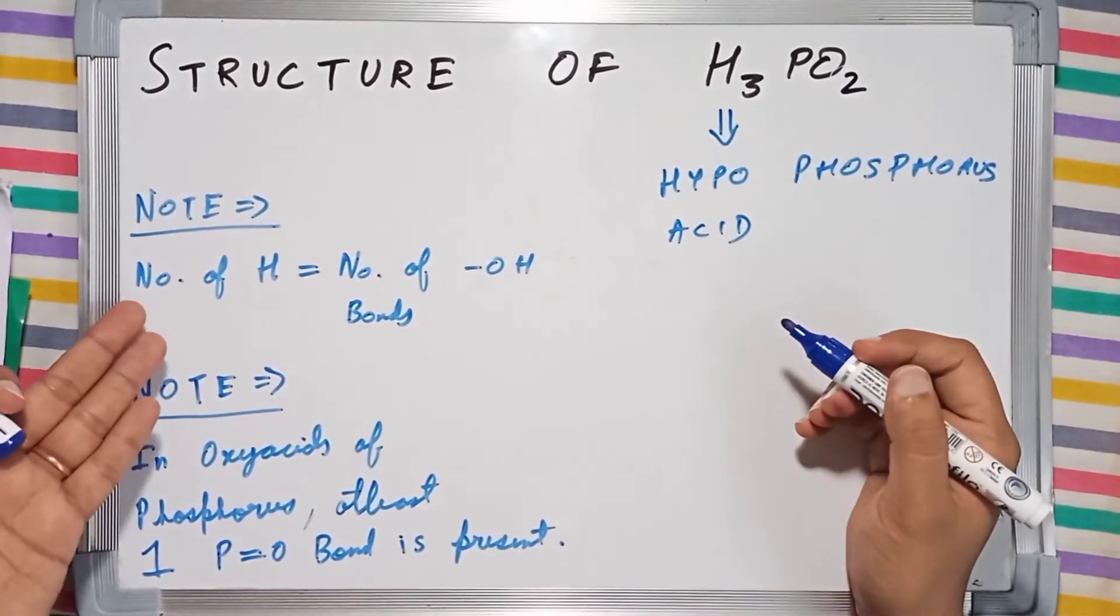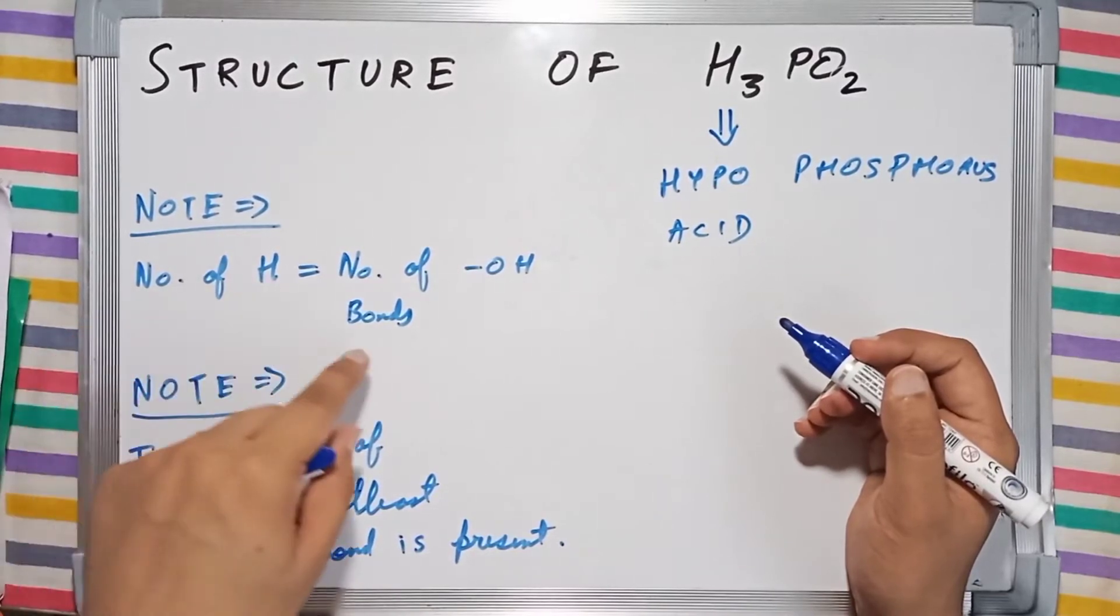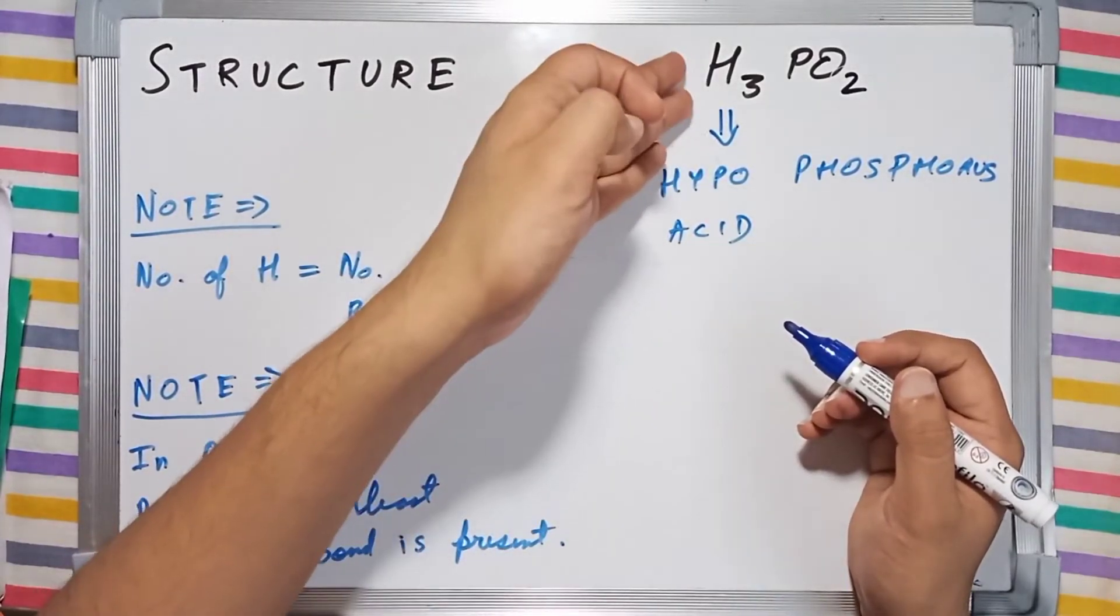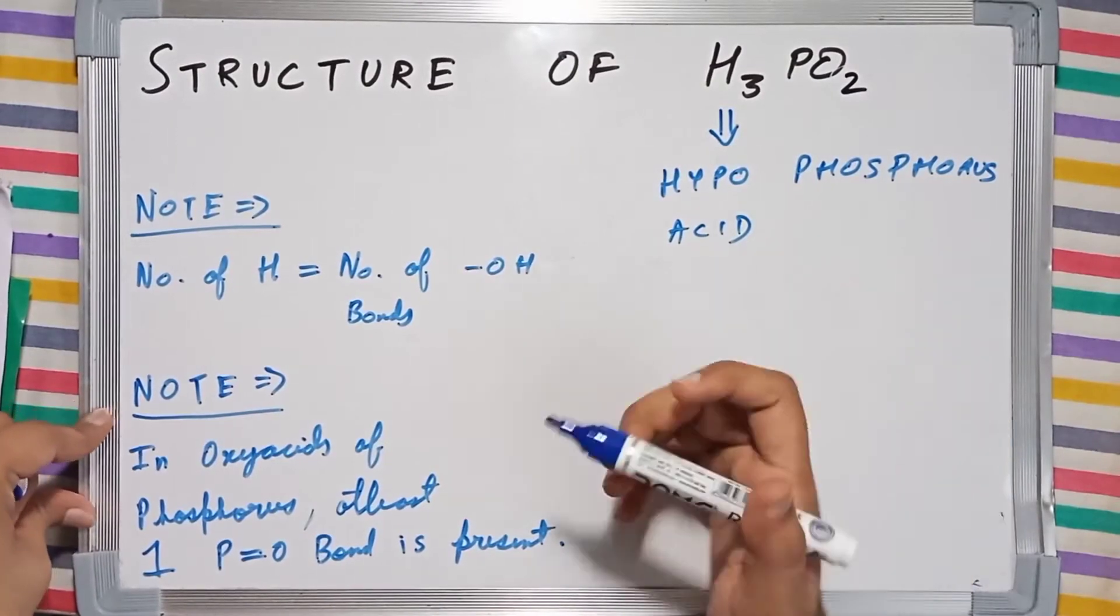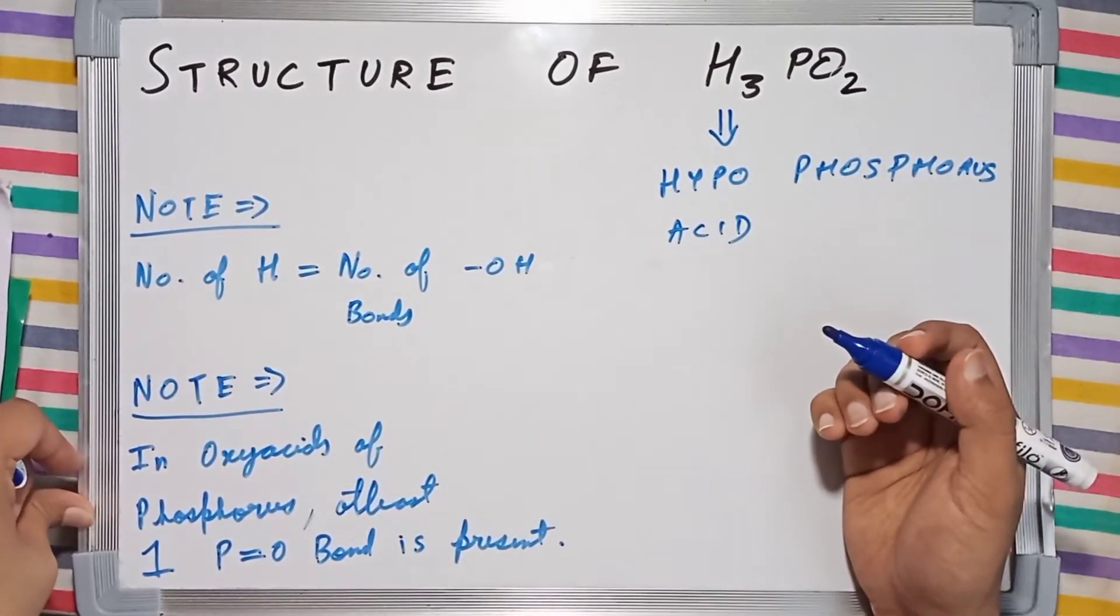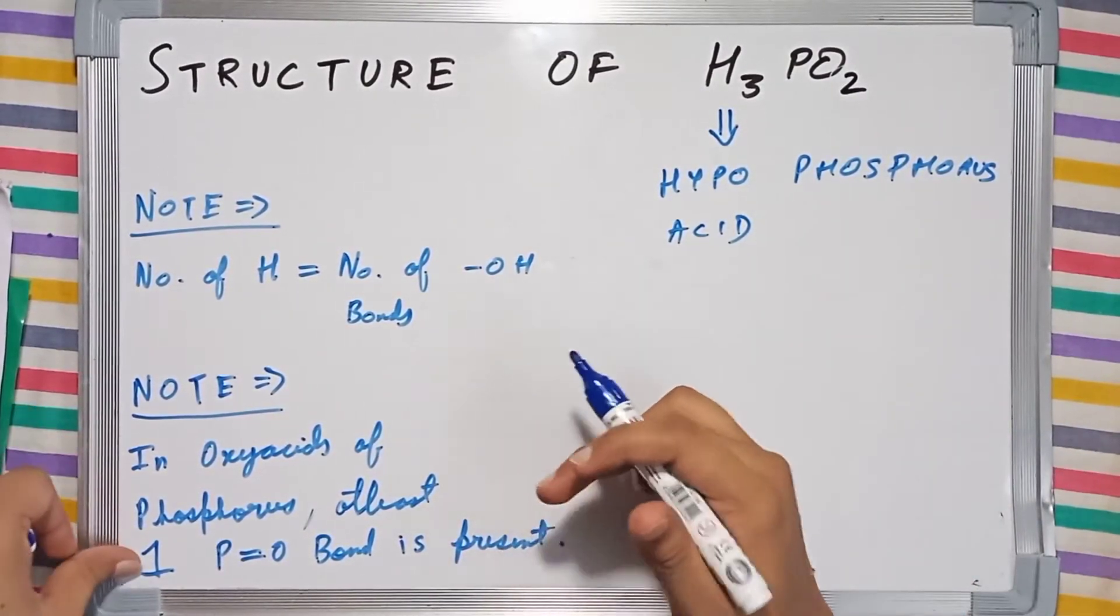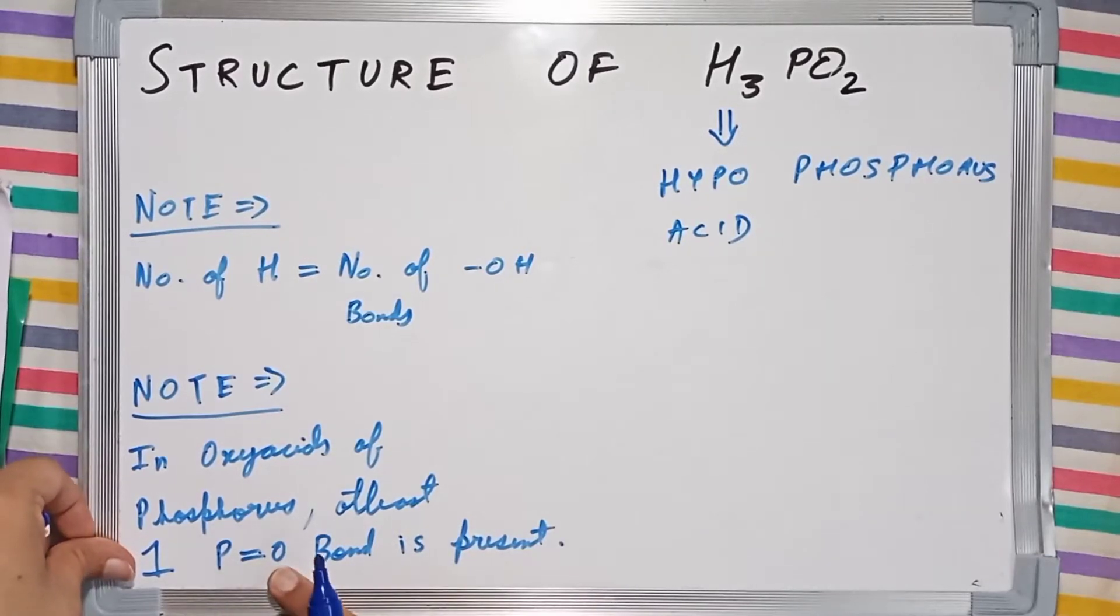The first note: the number of hydrogen atoms will be equal to the number of OH bonds present in the molecule. The second note: in oxy acids of phosphorus, at least one P=O bond is present.